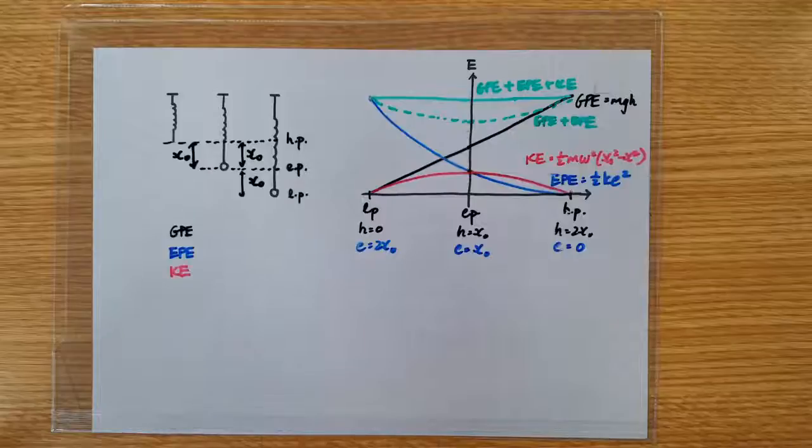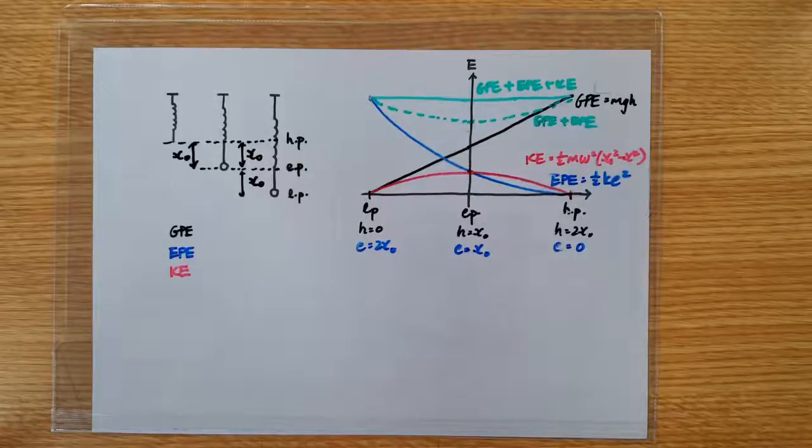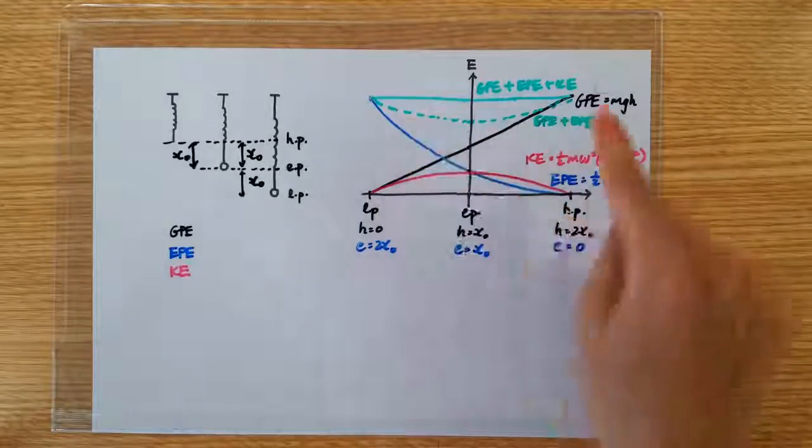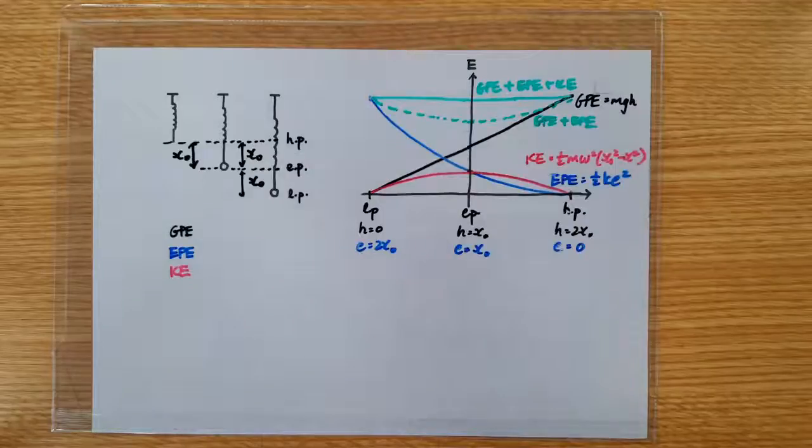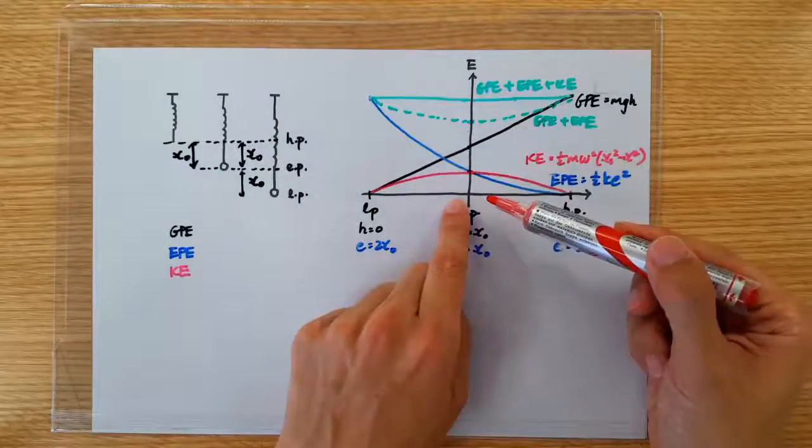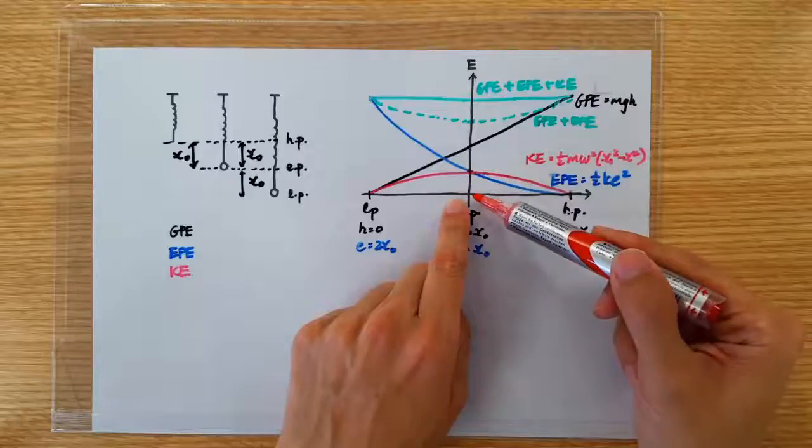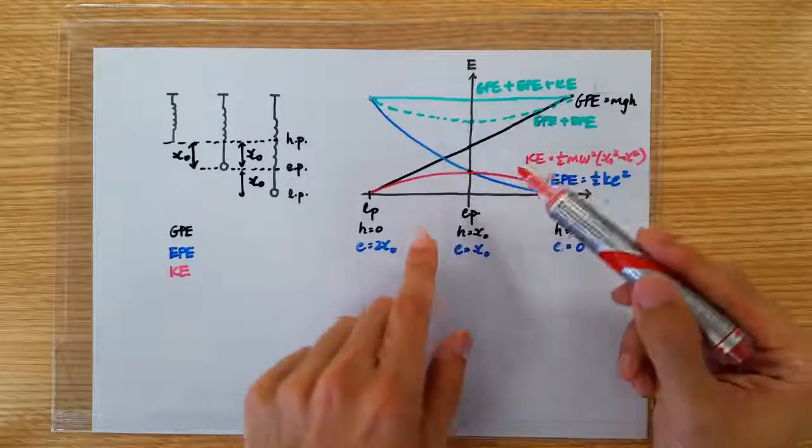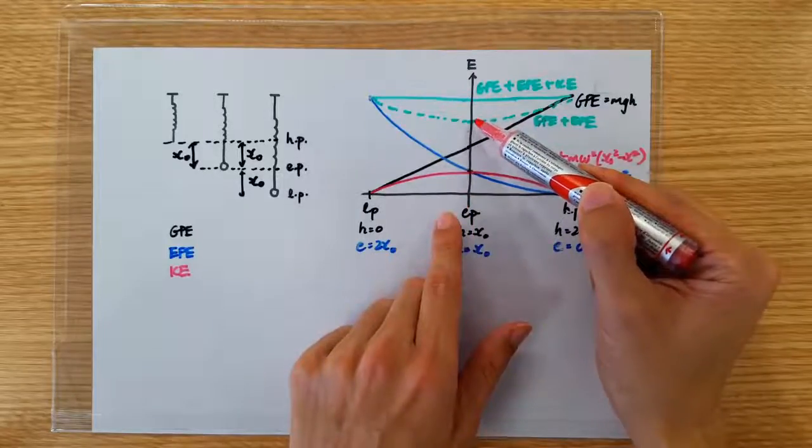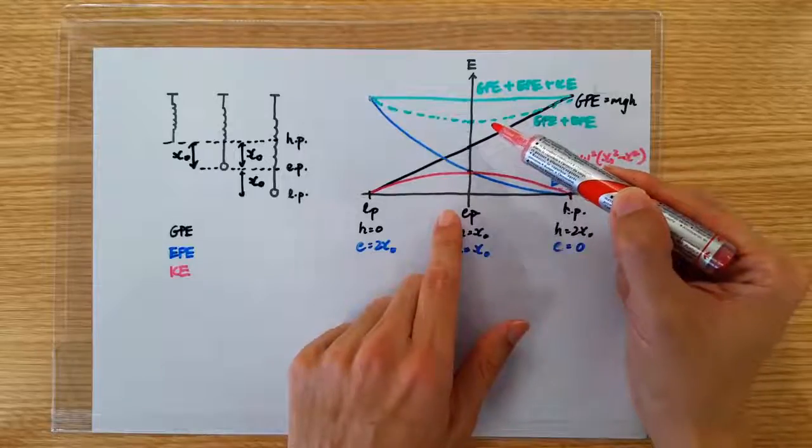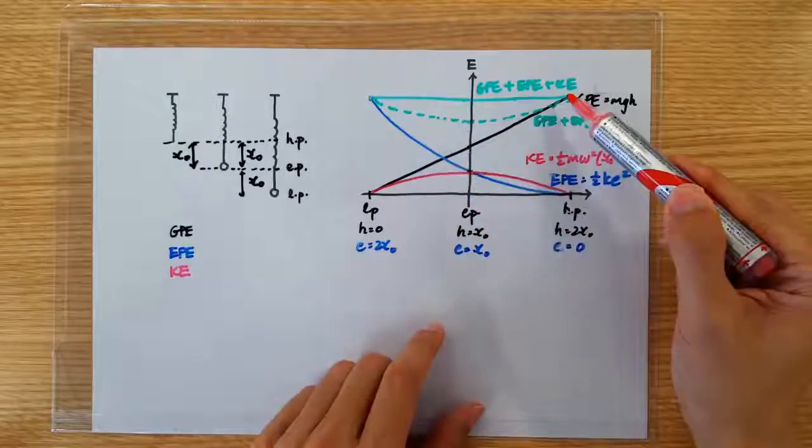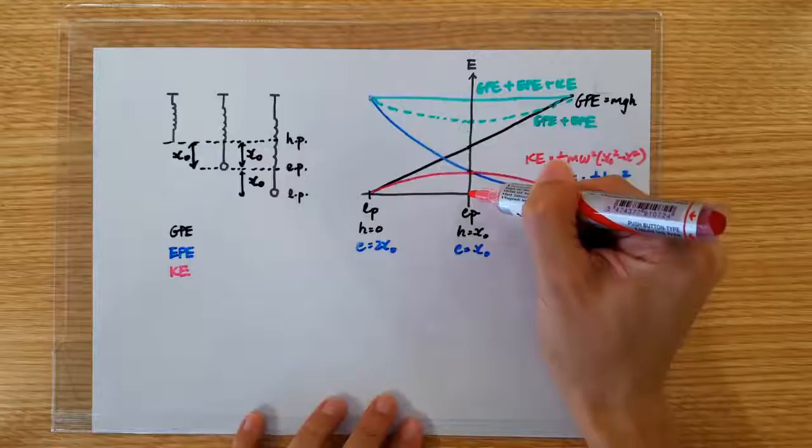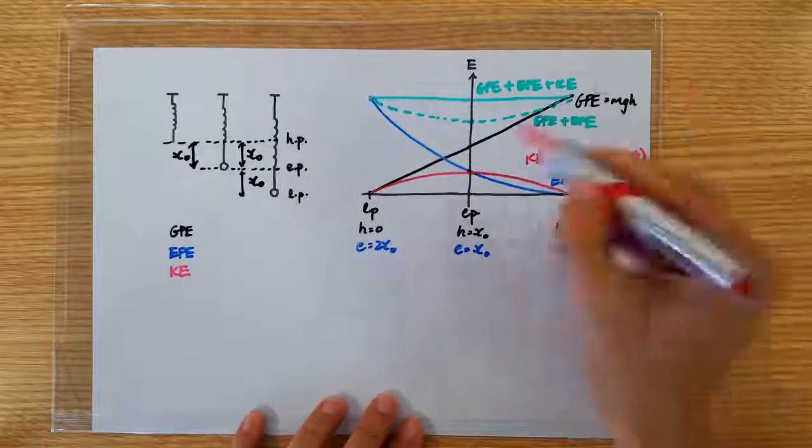Now, be careful. I wouldn't call this the total energy and potential energy of the oscillation. The potential energy of SHM ought to be zero at the equilibrium position. So if I want to sketch the potential energy of SHM, I ought to bring this line down such that it has a value of zero at the equilibrium position.